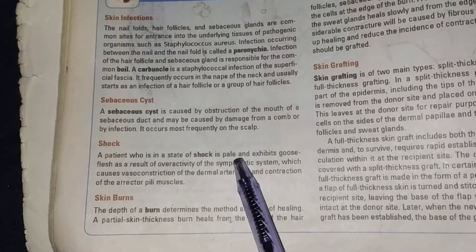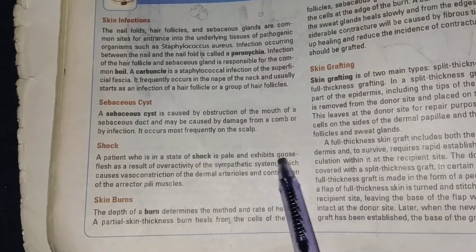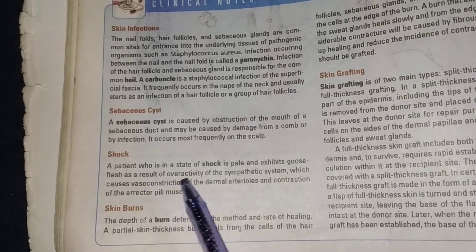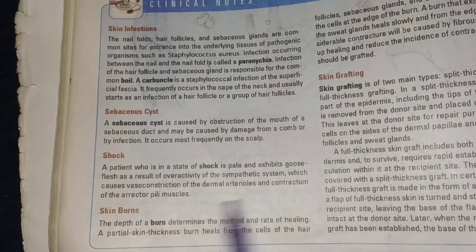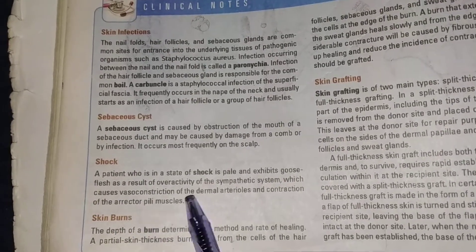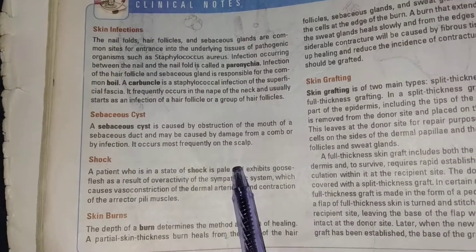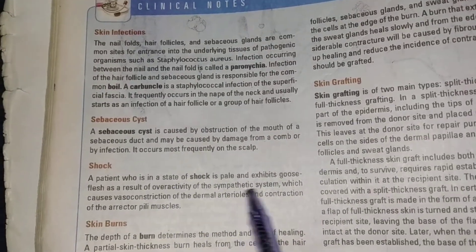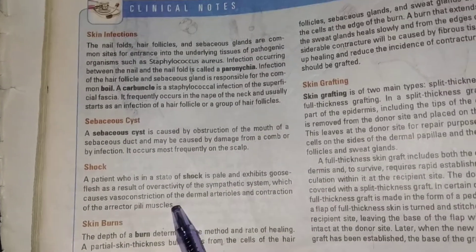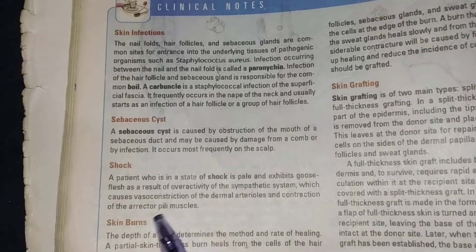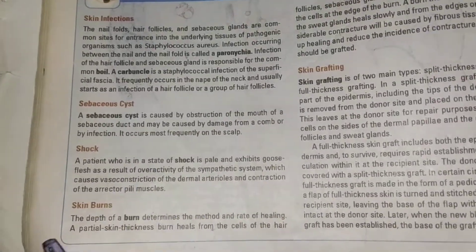A patient who is in a state of shock is pale and exhibits goose flesh as a result of over-activity of the sympathetic system, which causes vasoconstriction of the dermal arterioles and contraction of the erectile muscles. The skin color is pale due to constriction of the dermal arterioles and contraction of the erectile muscles.